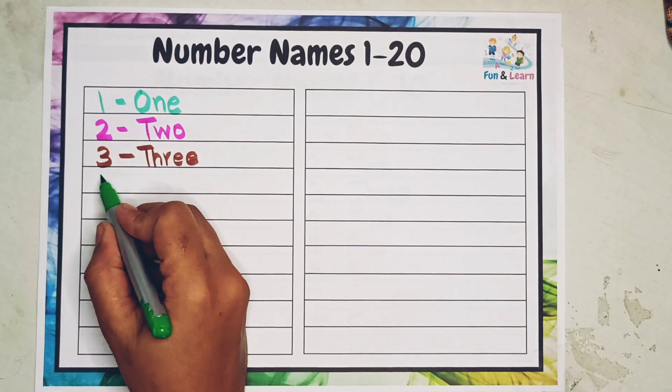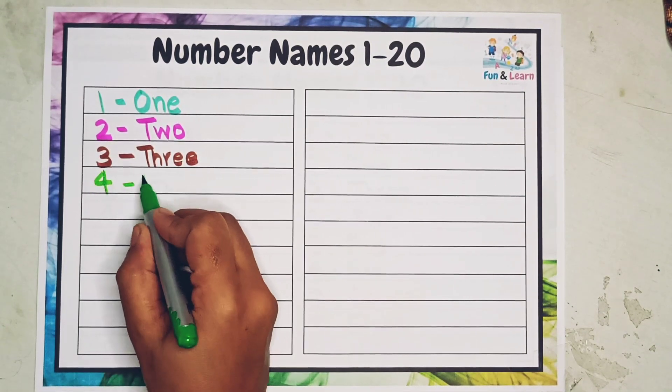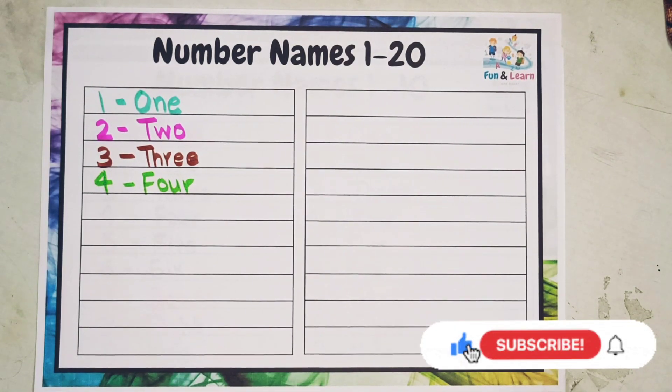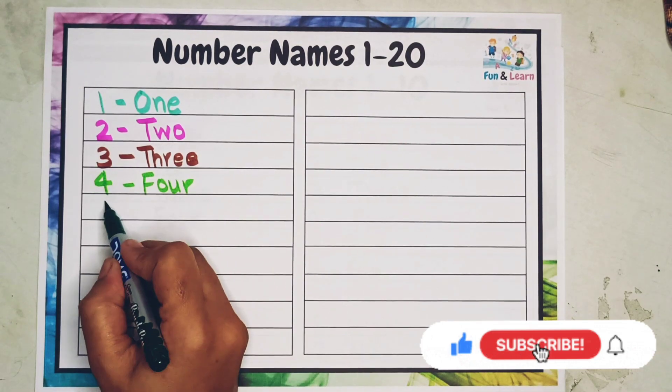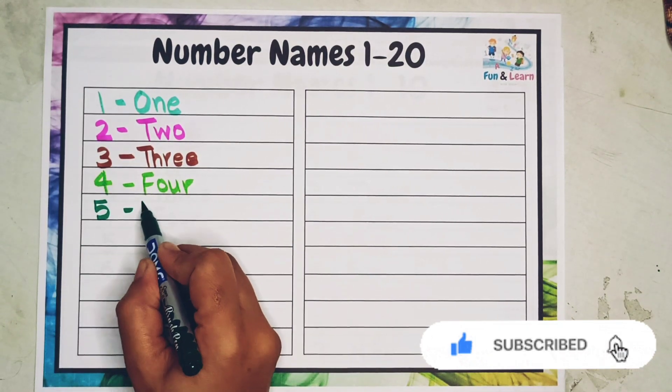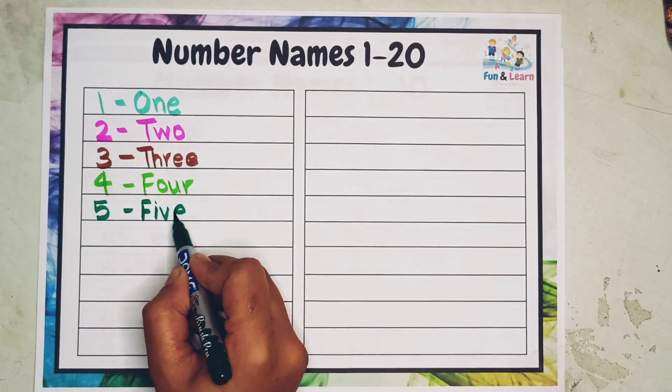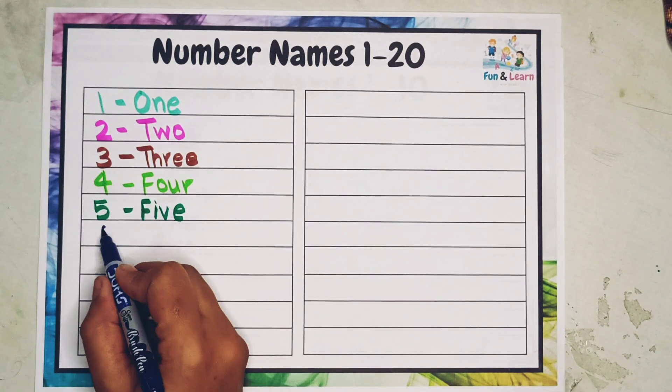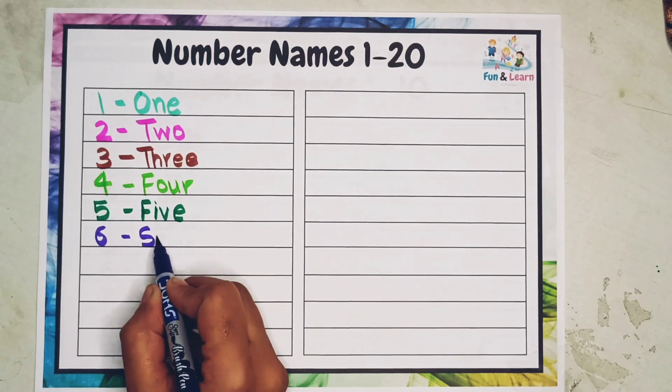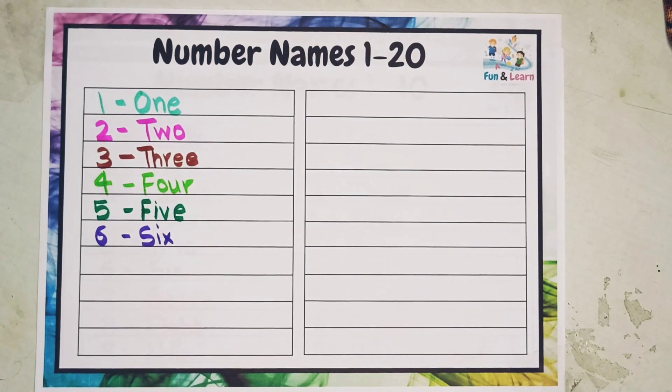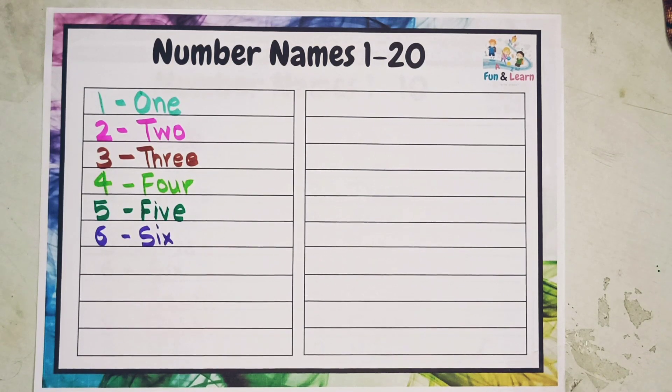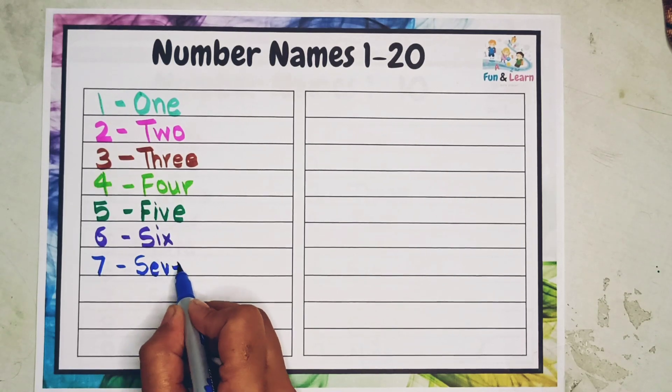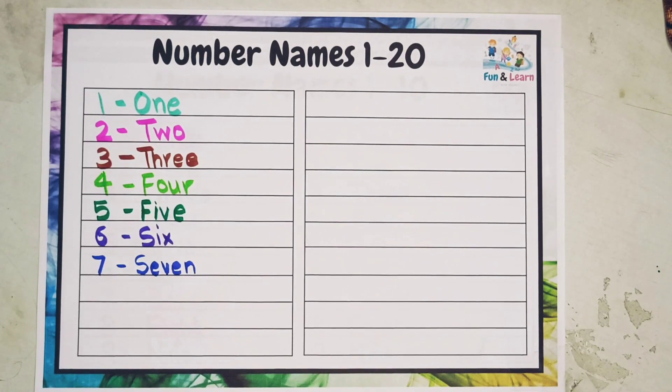Next is 4: F-O-U-R, four. F-O-U-R, four. Next is 5, repeat after me: F-I-V-E, five. F-I-V-E, five. 6: S-I-X, six. S-I-X, six. 7: S-E-V-E-N, seven. S-E-V-E-N, seven.